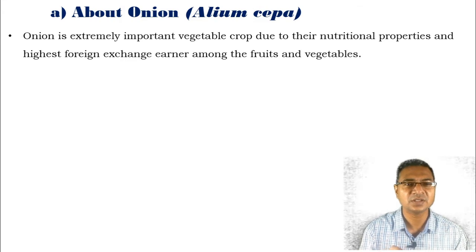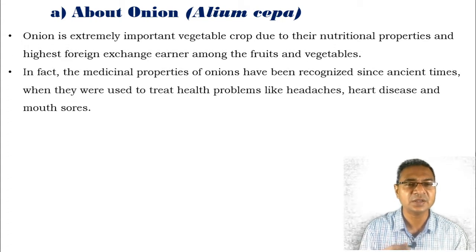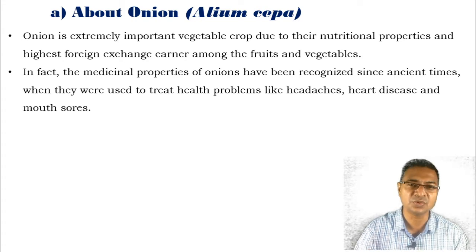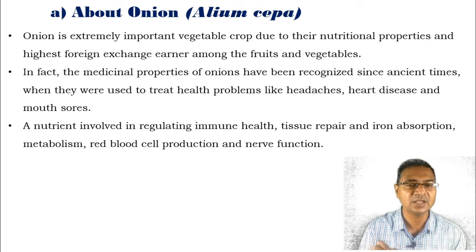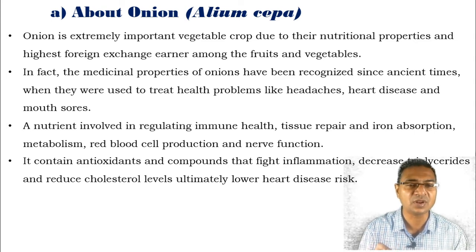First of all, the onion plant, that is Allium cepa. Onion is an extremely important vegetable crop due to its nutritional properties as well as being the highest foreign exchange earner among fruits and vegetables. It has medicinal properties, recognized from ancient times, when it was used to treat health problems such as headache, heart diseases, and mouth sores or ulcers. Nutrients involved include those regulating health, tissue repair, iron absorption, metabolism, red blood cell production, and nerve functions. It contains antioxidants and related compounds that fight inflammation, decrease triglycerides, and reduce cholesterol levels, ultimately lowering the risk of heart disease.